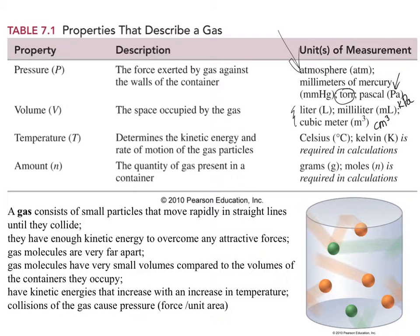Temperature — we're going to be looking at temperature in terms of gases as well. Temperature determines the kinetic energy and the rate of motion of the gas particles. The more energy the gas particles have, the more they move, the faster they move. One way to give them more energy is by raising the temperature — increasing temperature means applying thermal energy to the molecules. Or the reverse: taking it away, cooling something off — removing energy slows down the motion of the particles.